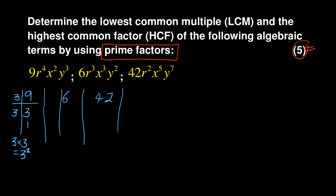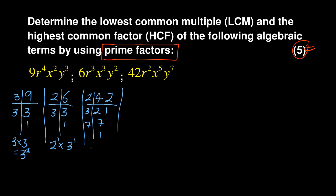For 6: the first number that goes in is 2, giving 3, and 3 gives 1. So 6 = 2 × 3, which in power form is 2¹ × 3¹. For 42: 2 into 42 is 21, 3 into 21 is 7, and 7 into 7 is 1. So 42 = 2 × 3 × 7, or in power form: 2¹ × 3¹ × 7¹.